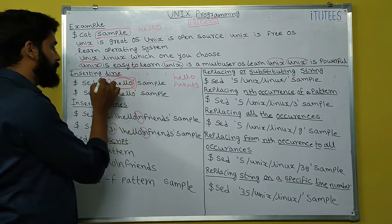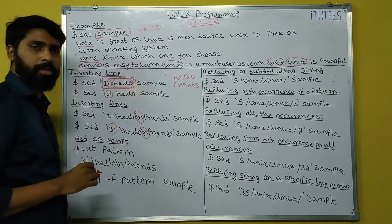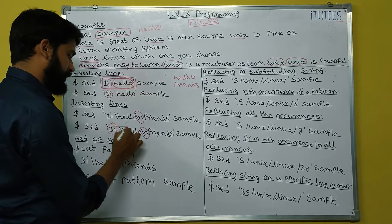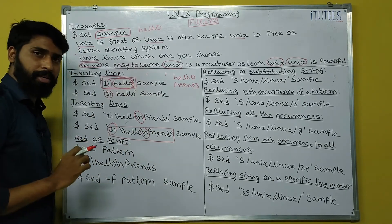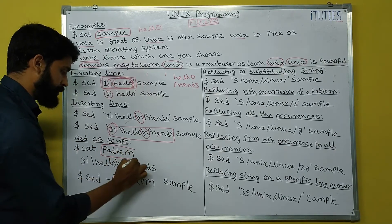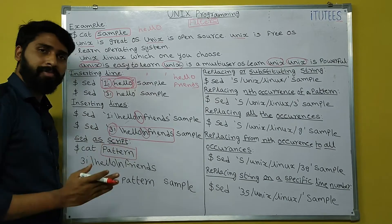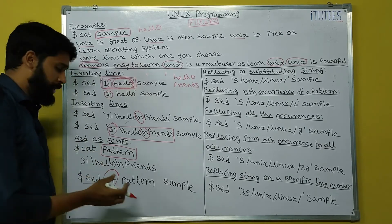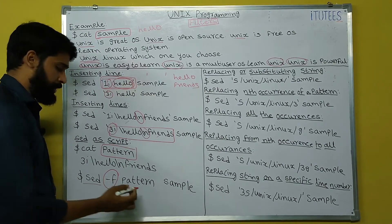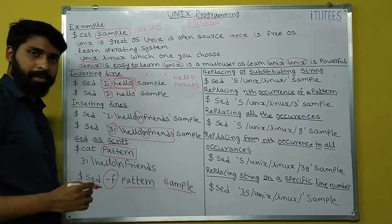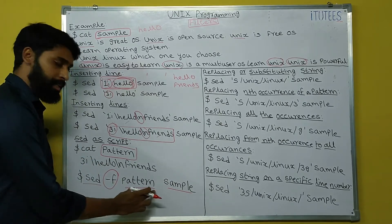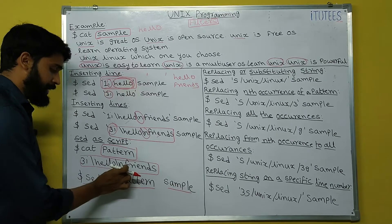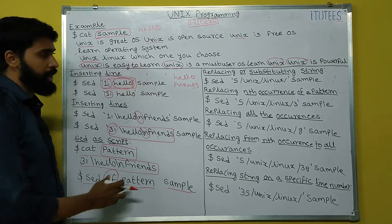SED as a script: instead of giving instructions directly on the command line, you can store the instruction in a file — for example, a file named 'pattern'. Then use: SED -f pattern sample. The hyphen-f option indicates that the next argument is a script file. The pattern file contains '3i\hello\friends', which inserts 'hello' and 'friends' as the third and fourth lines respectively, and the result is displayed on the monitor.